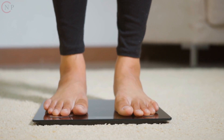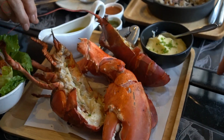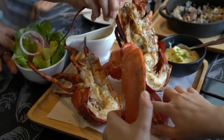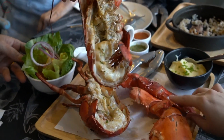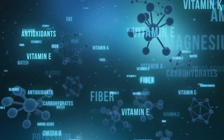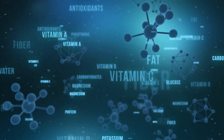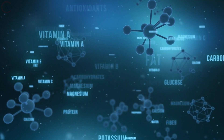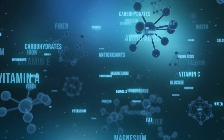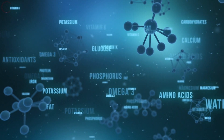2.2 Meal frequency. Consider how frequently you eat during the day. Do you eat on a regular basis, or do you frequently skip meals? 2.3 Nutrient balance. Examine the macronutrient balance — carbohydrates, proteins, and fats — in your diet. Is the ratio of each consumed item appropriate, or is there an imbalance?